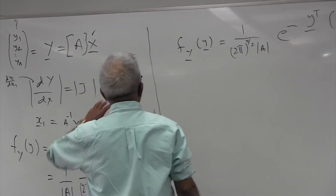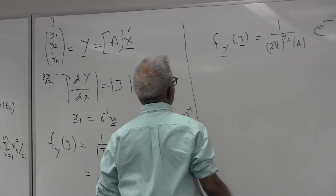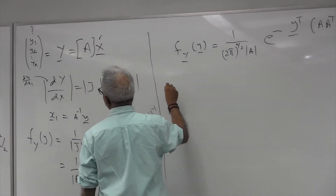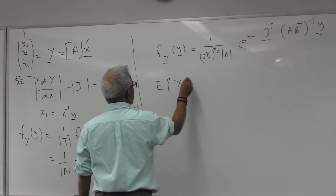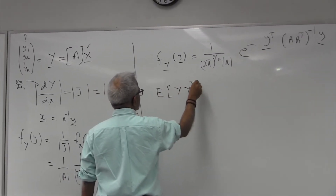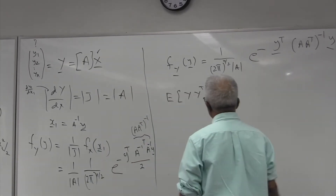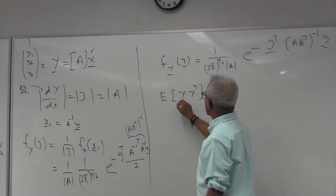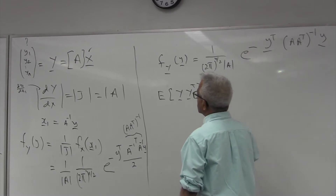Now, if I want to express A in terms of the autocorrelation function, I look at the expected value of y y^T, which is the autocorrelation matrix R_yy of the y vector.